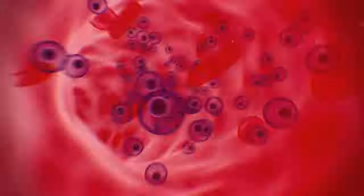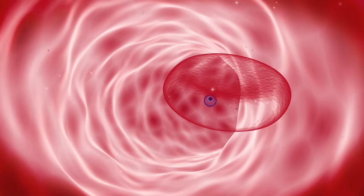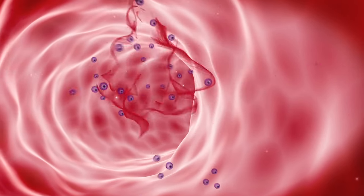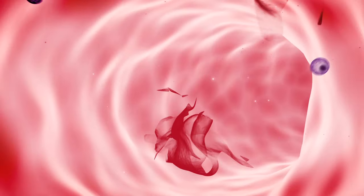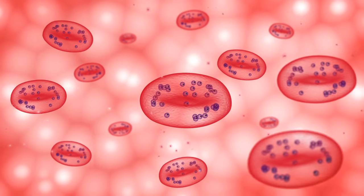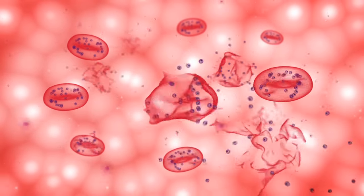They then infect healthy red blood cells, reproducing and eventually rupturing the cell, liberating more myozoites, which in turn go on to infect other cells, leading to the massive destruction of red blood cells.